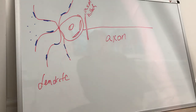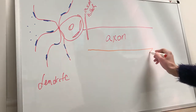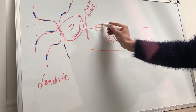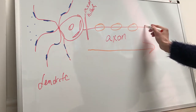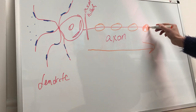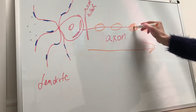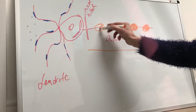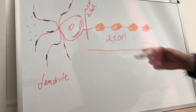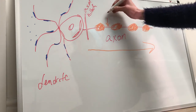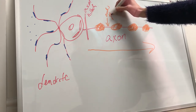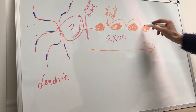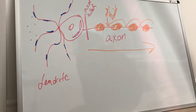Action potential only ever travels in one direction — it always travels the same way. Some axons have myelin sheathing around them: in the peripheral nervous system these are Schwann cells, and in the central nervous system these are oligodendrocytes. The myelin sheathing allows the action potential to jump, and the spaces between the myelin are called nodes of Ranvier. The action potential jumps from node to node, making transmission faster.